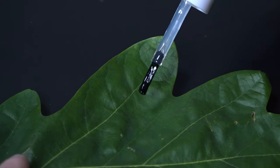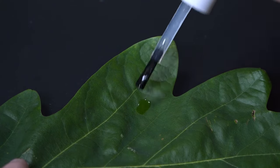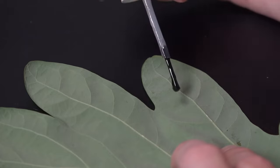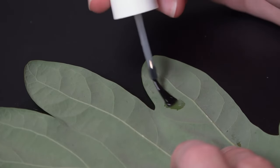First, I'll paint a small patch of nail polish on the leaf, avoiding major veins since they can mess up the peeling process. For funsies, let's compare the top and bottom surfaces of the leaf.